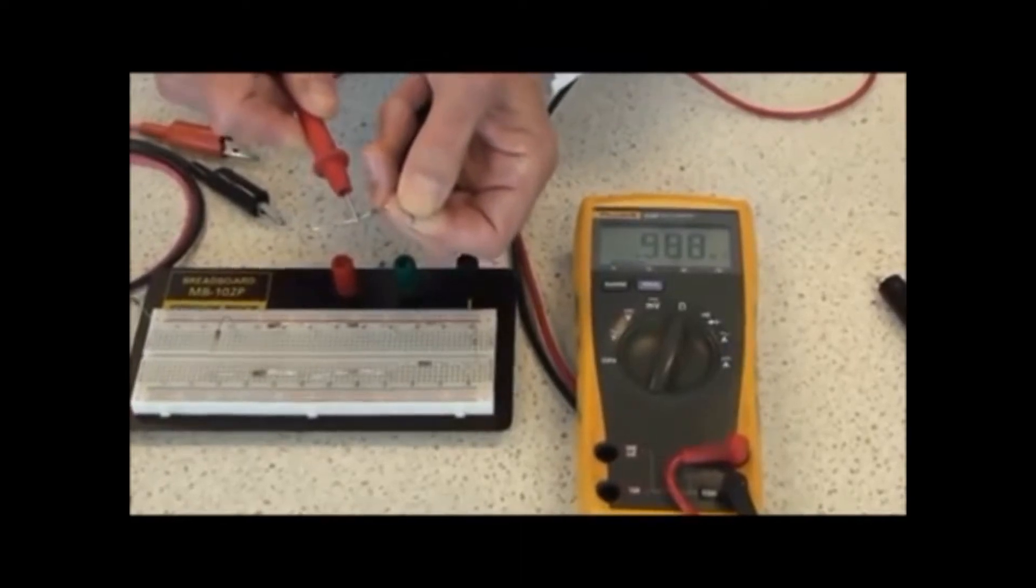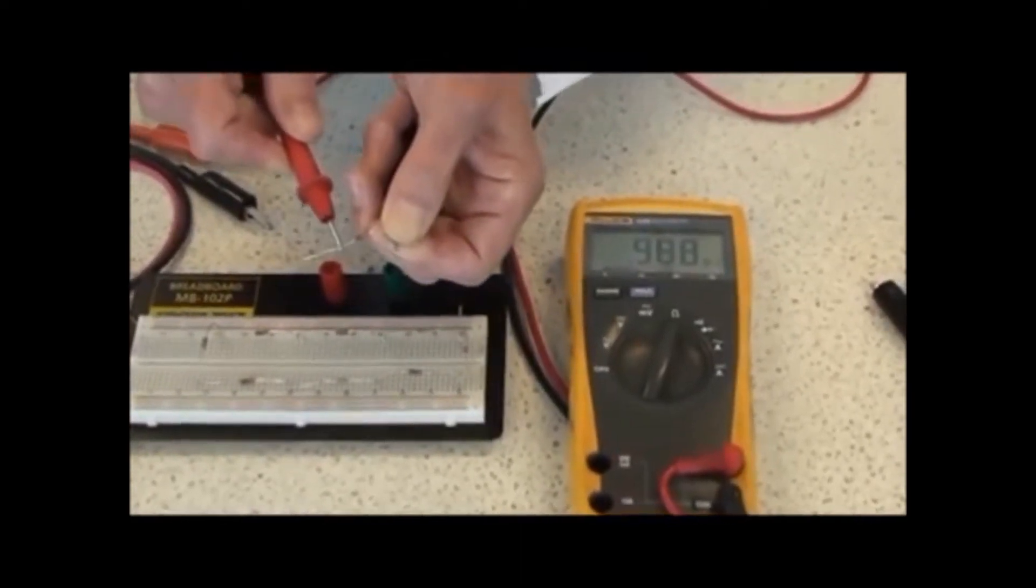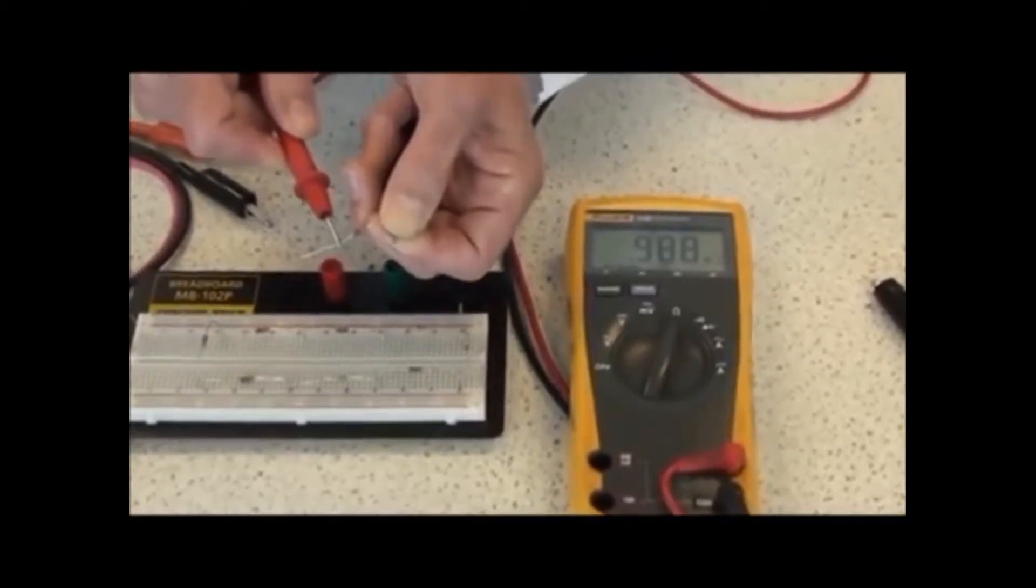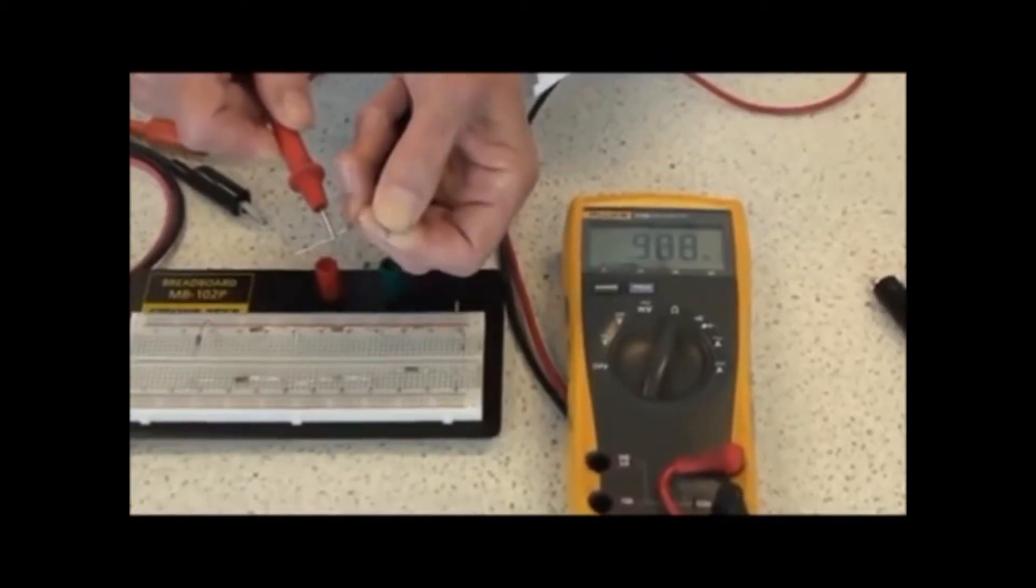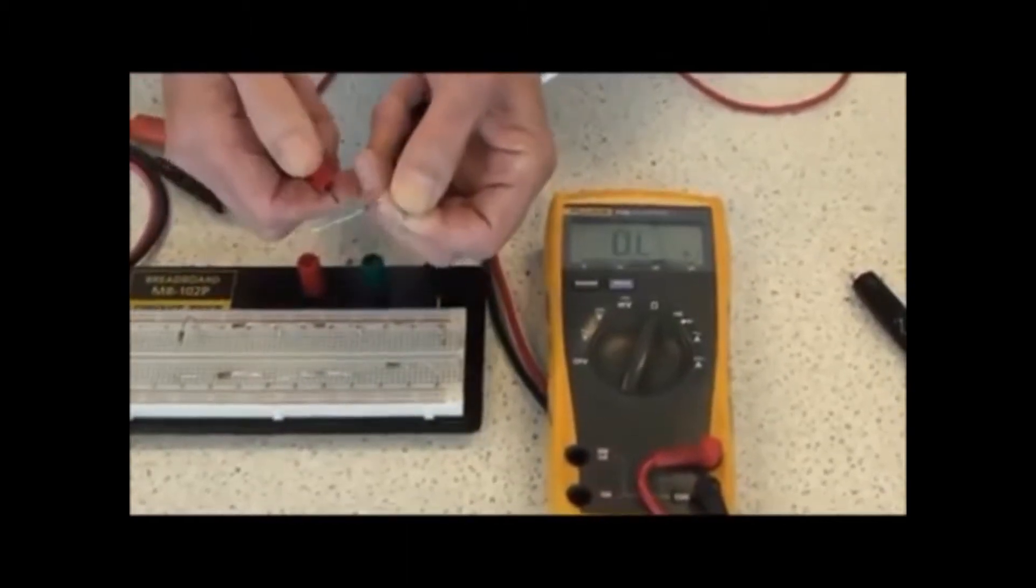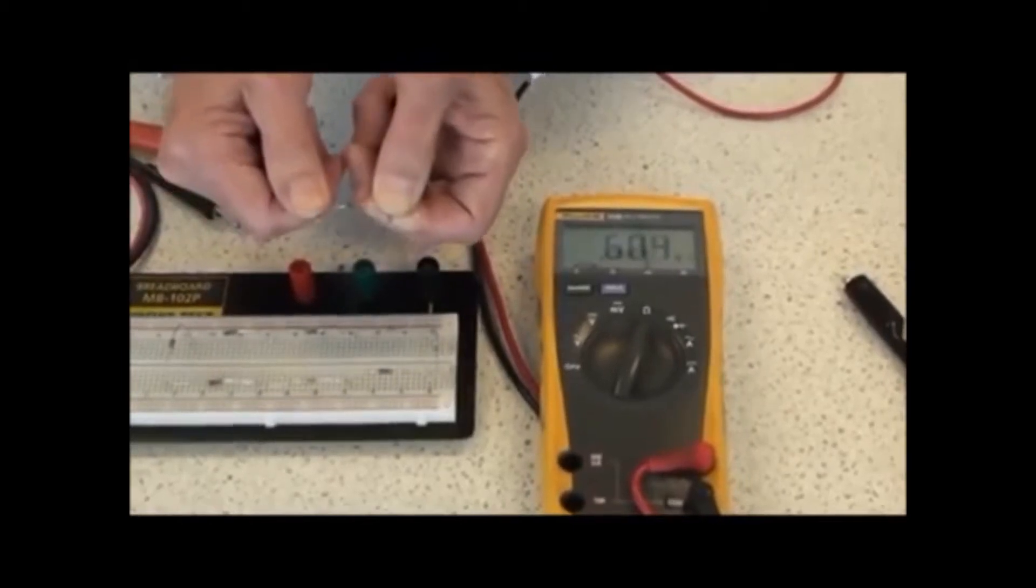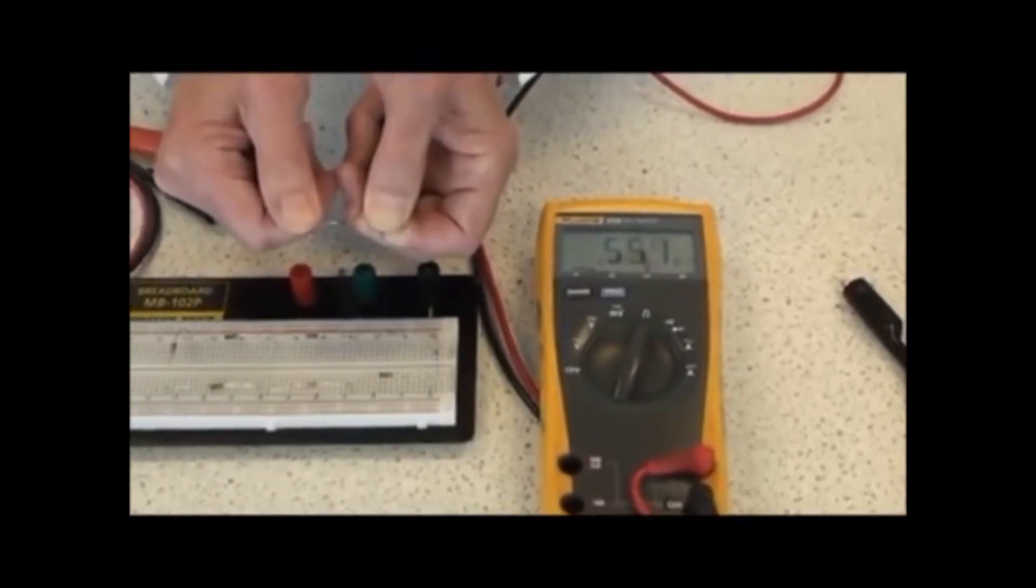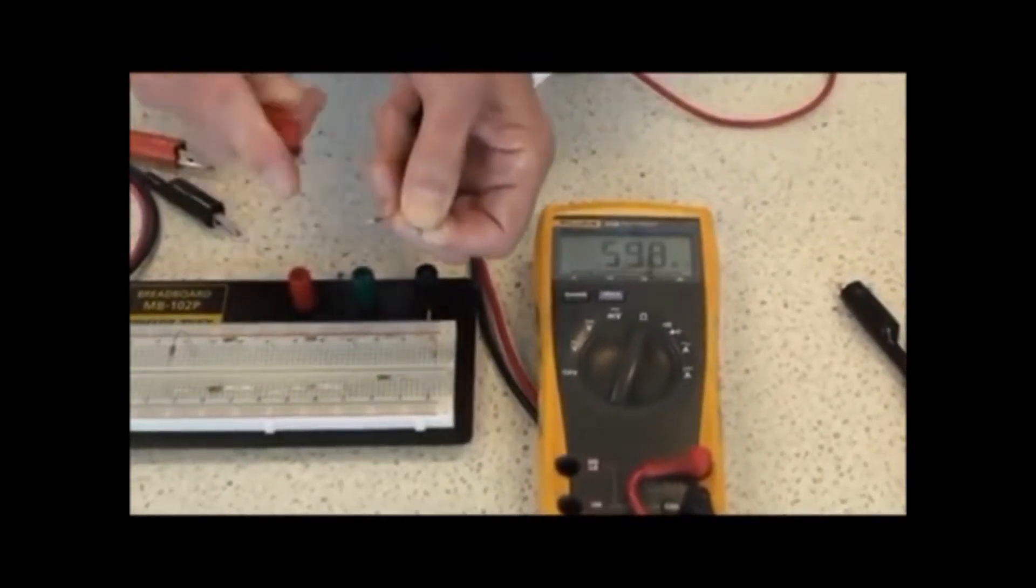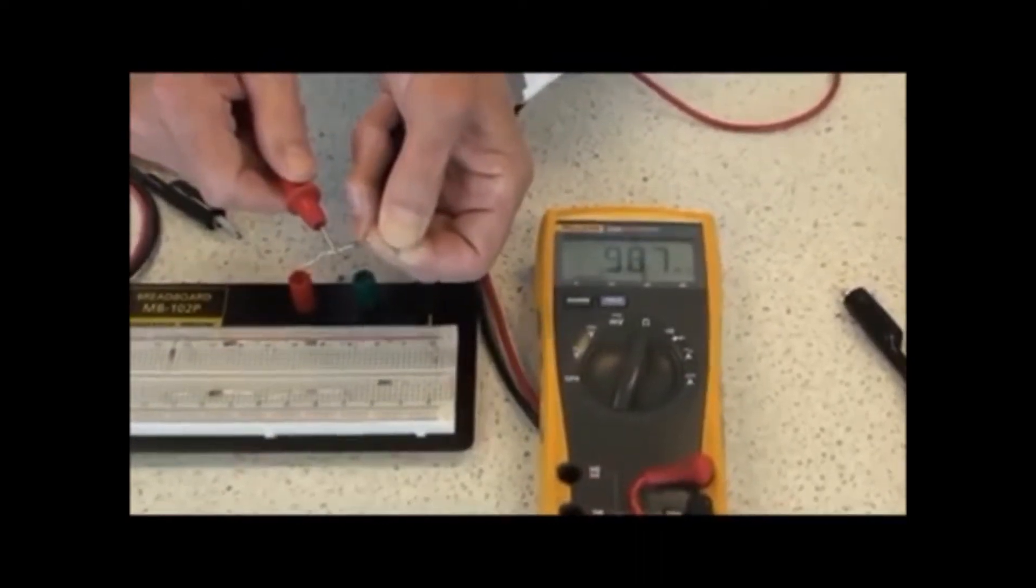It's very important to remember not to hold both sides of a loose component, because it's very easy to measure the resistance across your body if you do that. For instance, if I held both sides in my hands here, it would change to 0.5 megaohms, whereas the actual resistance reading is 0.9 megaohms.